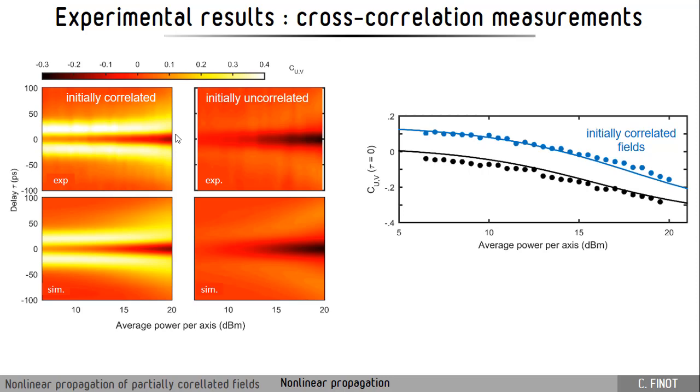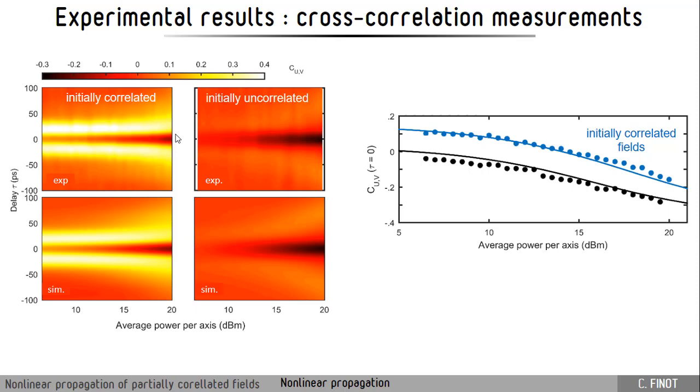To conclude, we have investigated how two partially incoherent optical fields with temporal correlations can be generated and then can propagate in a fiber. We have checked that the dispersive propagation does not affect the properties of the various fields, and we have also shown that when you induce some non-linearity, it will tend to something that is called the domain wall, and here this is a very powerful attractor of the propagation. Here I've just forgotten to mention that the propagation in all the cases that we have studied was made in a normally dispersive fiber.